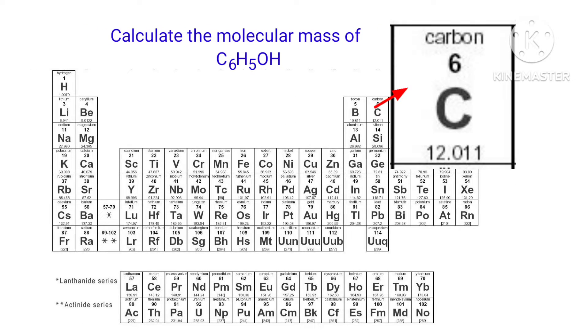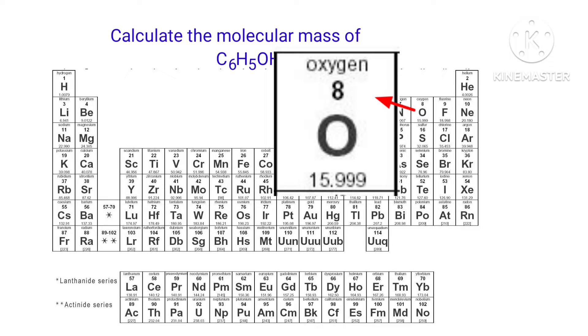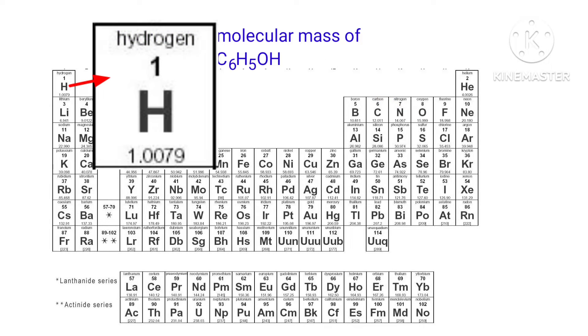The atomic mass of Carbon is 12.011, the atomic mass of Oxygen is 15.999, and the atomic mass of Hydrogen is 1.0079.